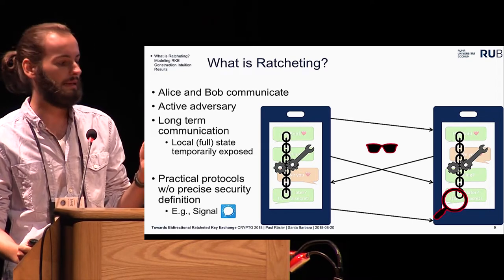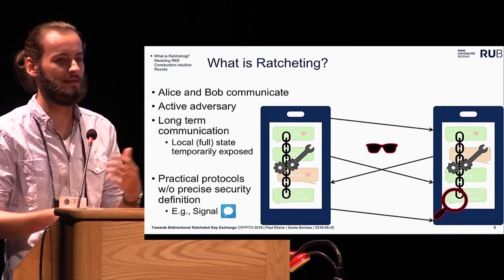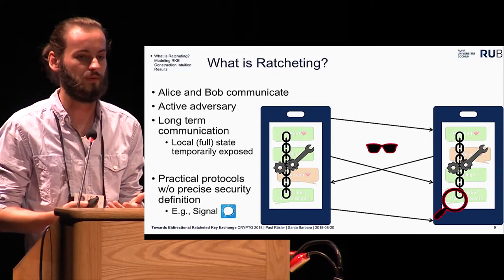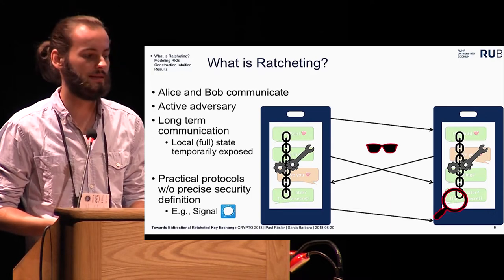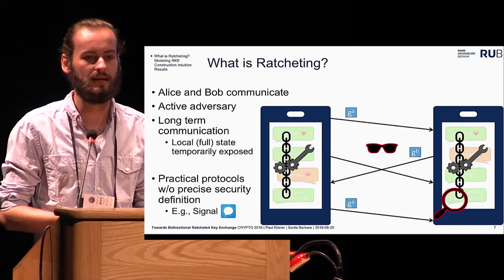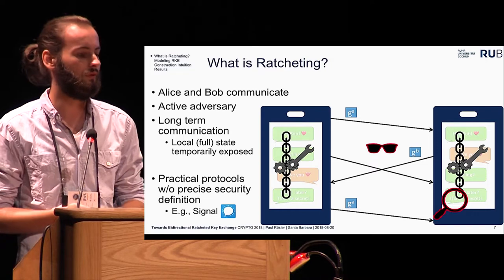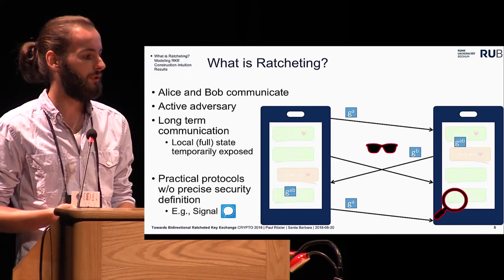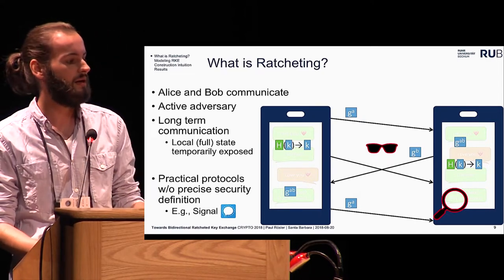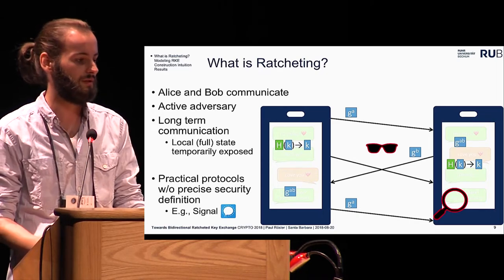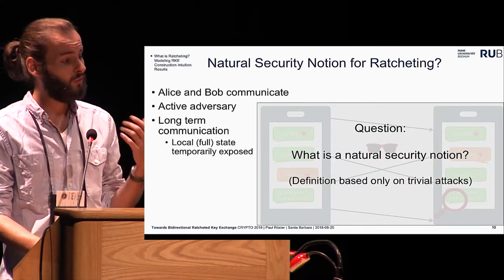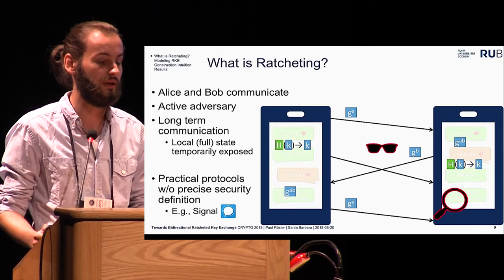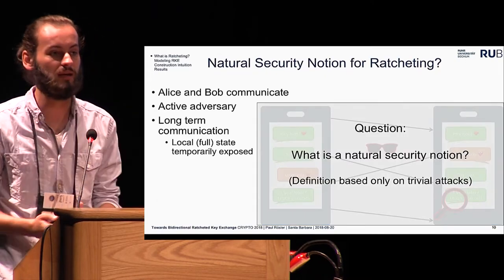Ratcheting is the technique that helps Alice and Bob to be secure in such an adversary setting. This ratchet is a technique applied to the state of Alice and Bob that mixes in new information such that it cannot be foreseen by an adversary who has the state now — which information will be mixed into the state in the future — and it also invalidates old information such that it cannot be accessed in the future anymore. Signal lets Alice and Bob send Diffie-Hellman shares over the network repeatedly, and both use these shares to compute Diffie-Hellman key exchanges, which then update the local state. They also use hash chains to update the state forward securely as long as the other party does not respond, in a non-interactive setting.